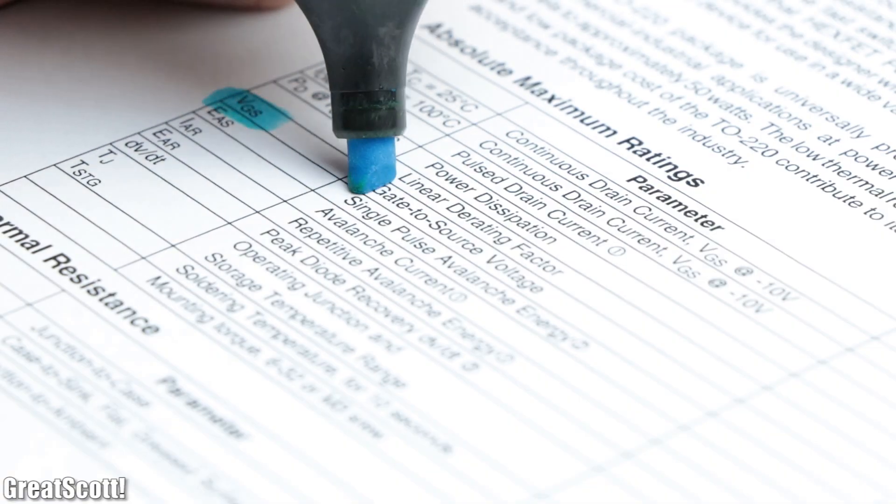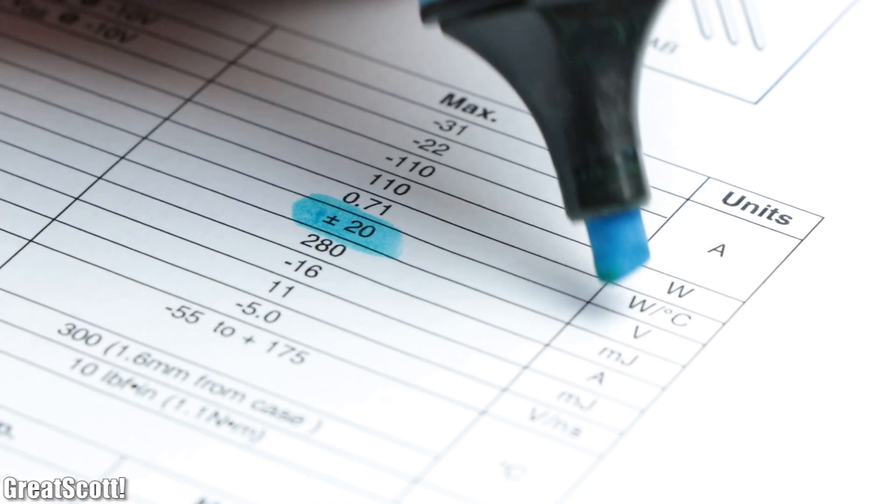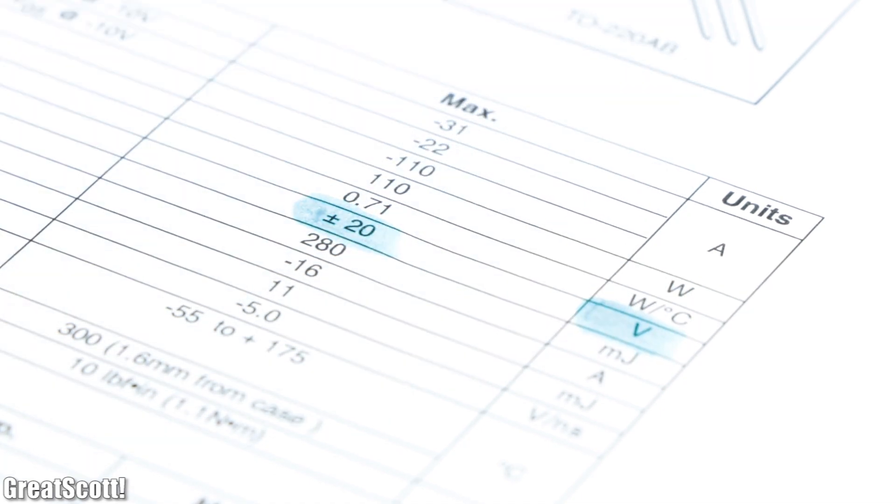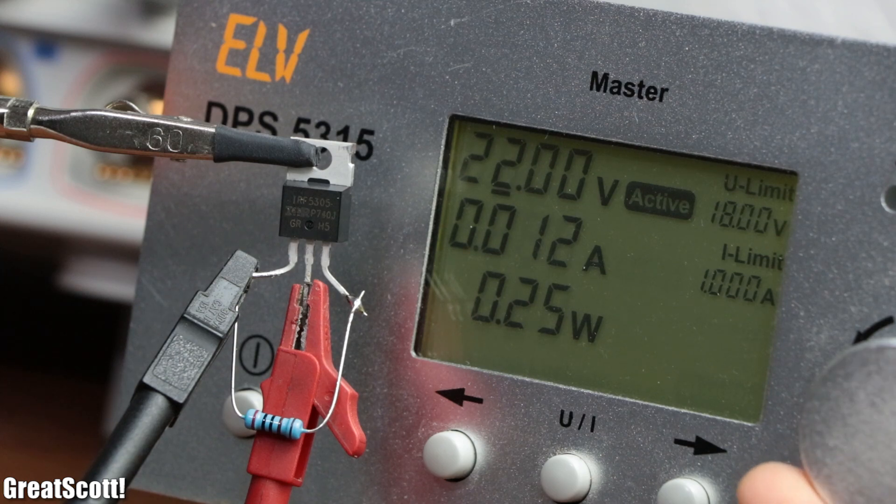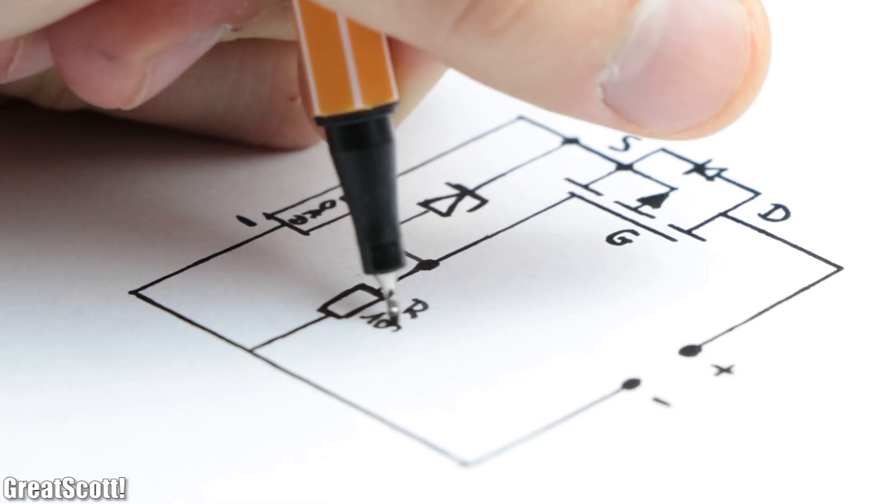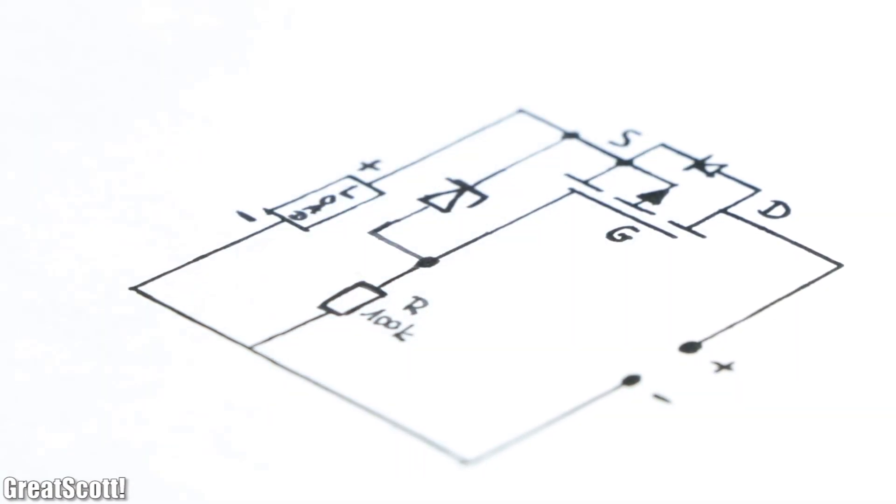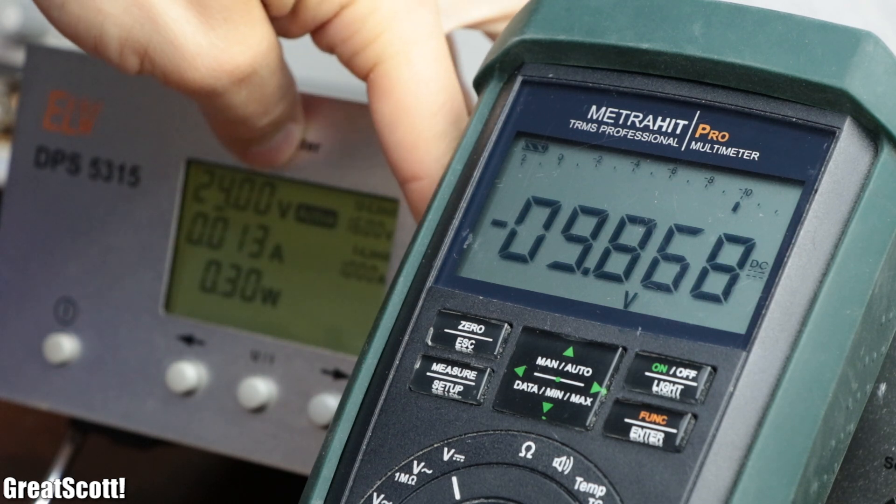Also my MOSFET got a maximum gate to source voltage of plus minus 20 volts. Anything above that will lead to the destruction of it. But of course, you could add a resistor and a zener diode in order to limit the gate voltage to a suitable limit.